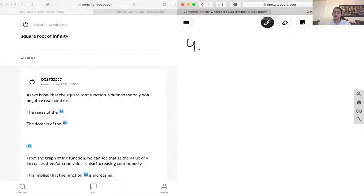We're going to use limits to do that. So we're going to say that the limit of x as it approaches infinity of the square root of x, because that's our function, is equal to infinity.